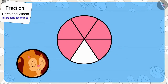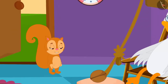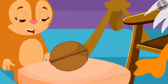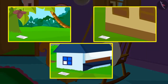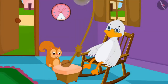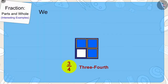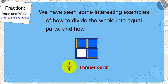Chanda remembered from the picture you made that she saw such a circle-shaped clock in uncle's house. She immediately reached Barbole uncle's house and there she saw that Barbole uncle had brought her her most cherished nut. He had written all these clues to give Chanda a surprise. Children, in this lesson, we have seen some interesting examples of how to divide the whole into equal parts and how to write it in fractions.